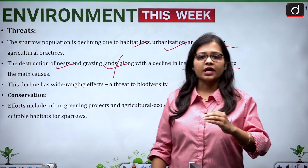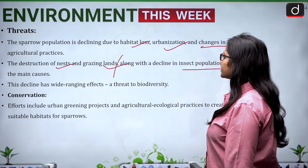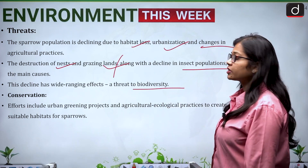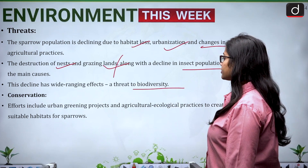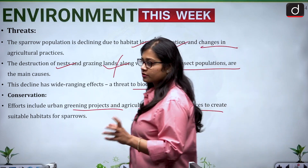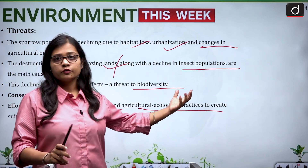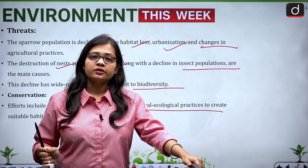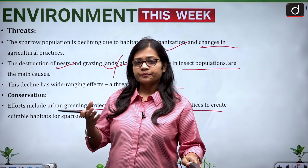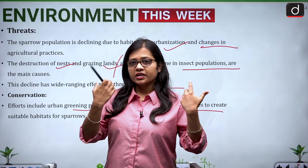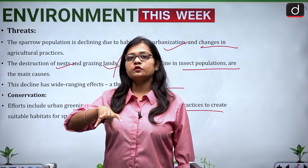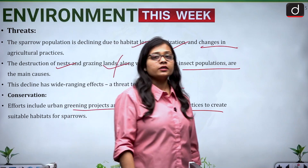This decline in sparrow numbers is a threat to biodiversity. Conservation efforts include urban greening projects and agro-ecological practices to create suitable habitats for sparrows. If sparrows are moving away from areas where they earlier used to stay, agricultural and greening regions need to be restored so that sparrows can find suitable areas for building their nests.